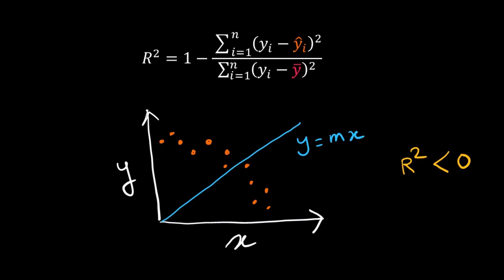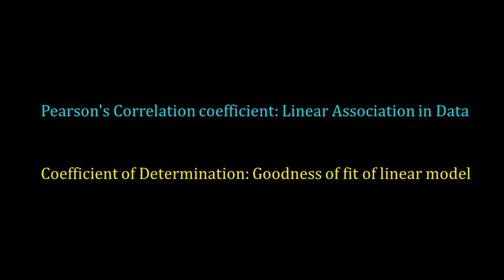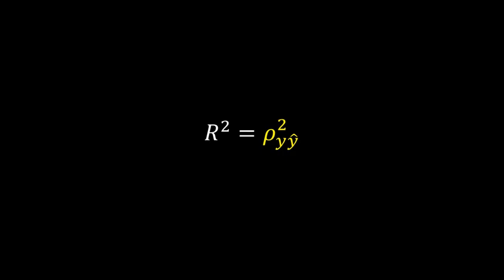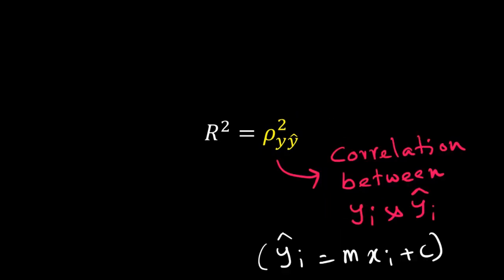We have learned Pearson correlation coefficient earlier. That also shows linear association or trend in our data. Is there any relation between Pearson's correlation coefficient and R²? In fact there is. I will discuss that relation but not deriving it. It says R² is equal to the square of ρ of y and ŷ. This ρ is the Pearson correlation coefficient between the data and the fitted model. In other words, it is the correlation between yi and ŷi.